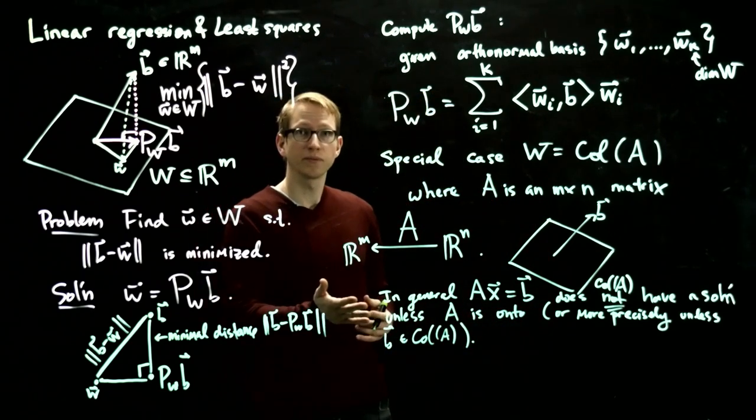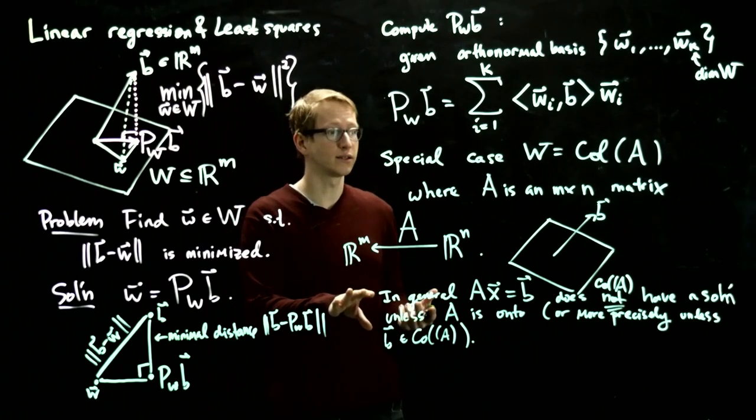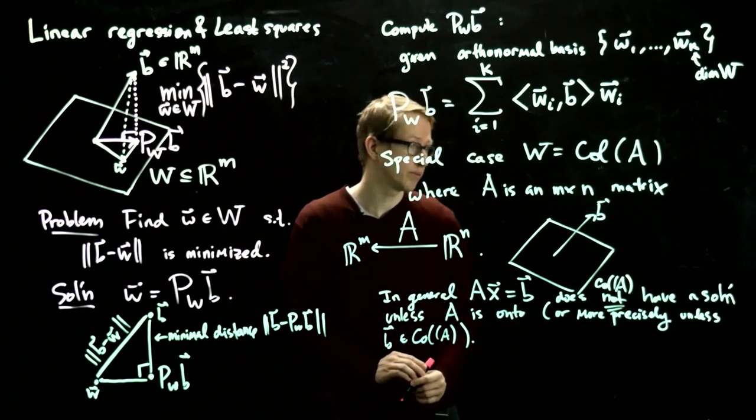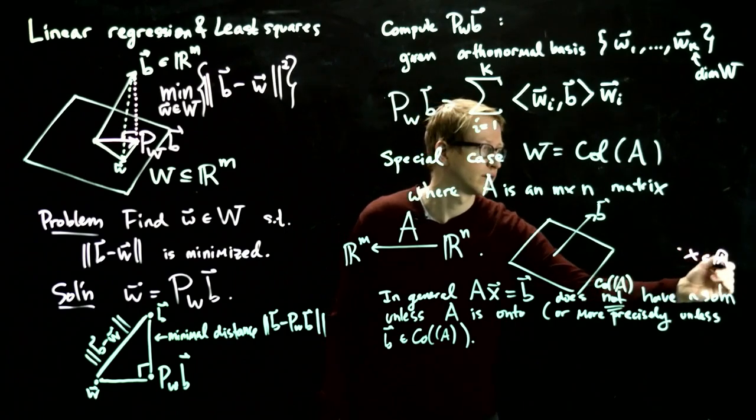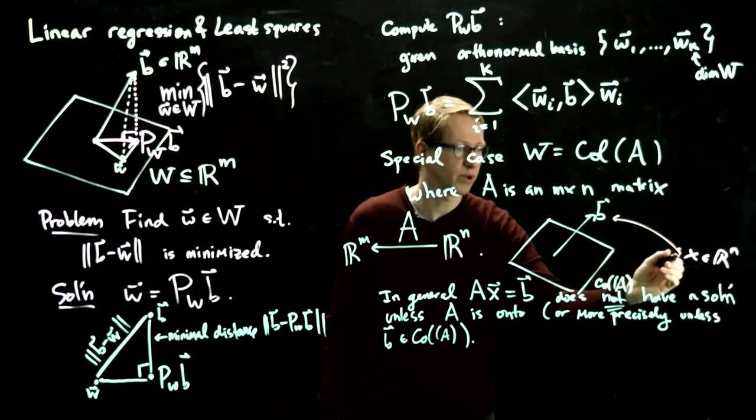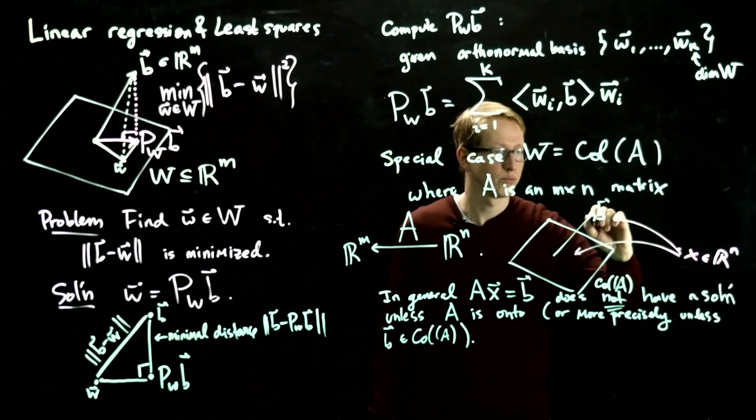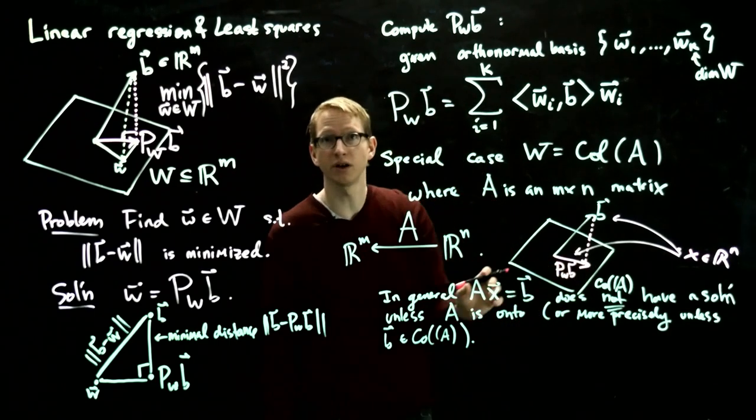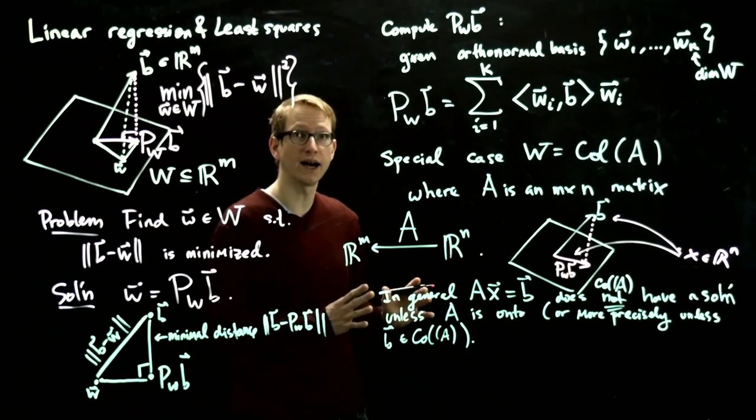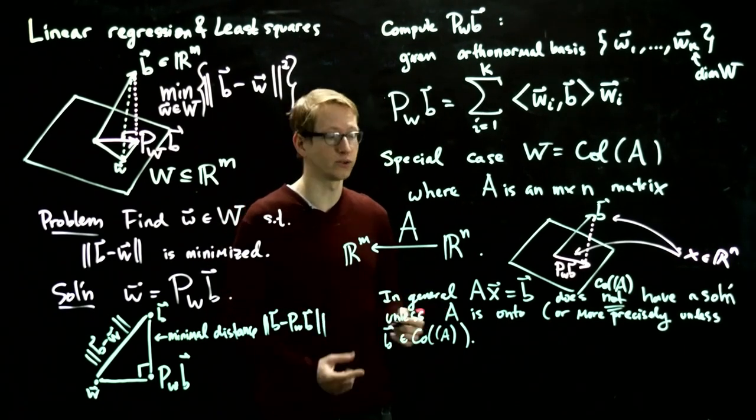But because this doesn't happen in general, instead of trying to solve this system which might not have a solution, we can solve an associated system instead. I might not be able to find an x in our domain that maps to the vector b, because all x's get mapped to this subspace. What instead we can try to find is: project b onto this subspace, and now this vector, the projection of b onto that subspace, is by definition inside the column space of A. And therefore we can solve that associated system.